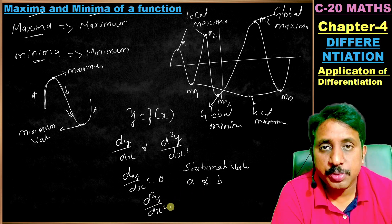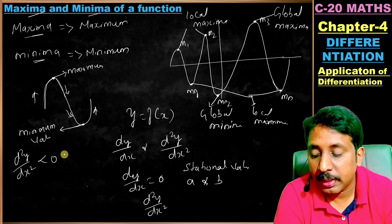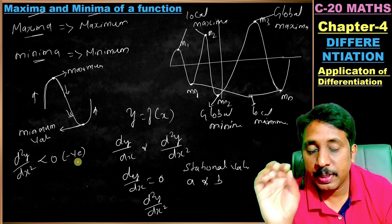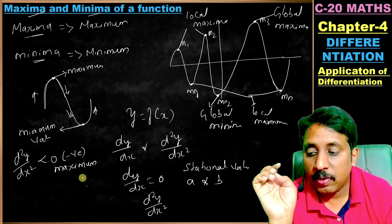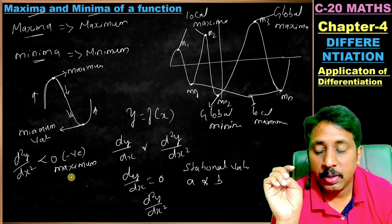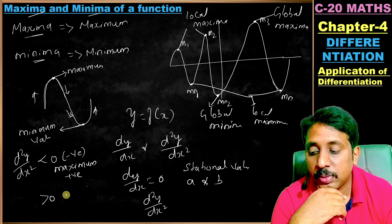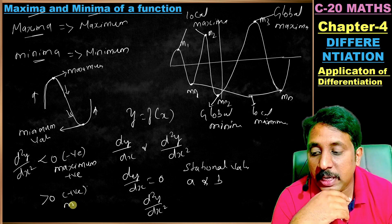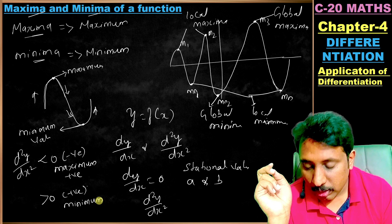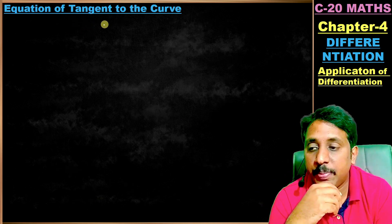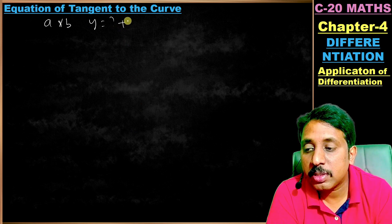After substituting the values into d²y/dx²: if d²y/dx² is less than zero (negative), then the function is maximum. If d²y/dx² is greater than zero (positive), then the function is minimum. Then substitute a and b back into the original equation y to get the actual maximum or minimum value.